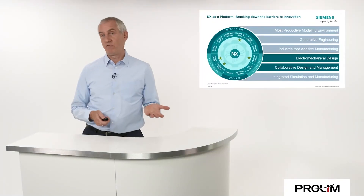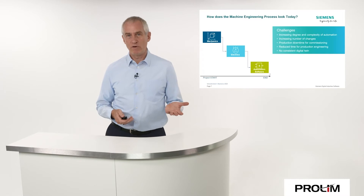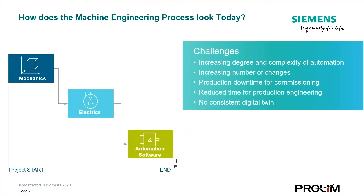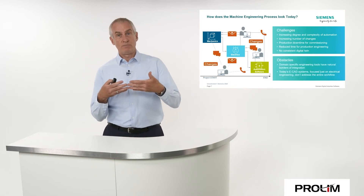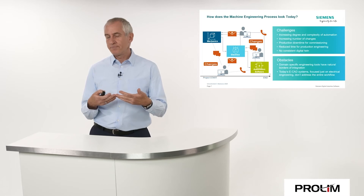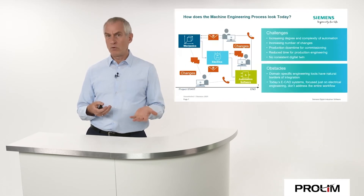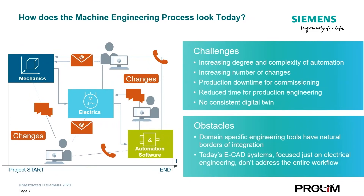But where do you typically come from? Typically, you come from a traditional world where the mechanical engineer starts, hands over design results to the electrical department. They do their electrical schematics and bills of materials of electrical devices, and hand that over to automation. The problem is that the interfaces between those domains are not really standardized — they are weak, error-prone, and require a lot of communication. Electrical design is still not really automated; it's still a lot of manual painting of electrical schematics.